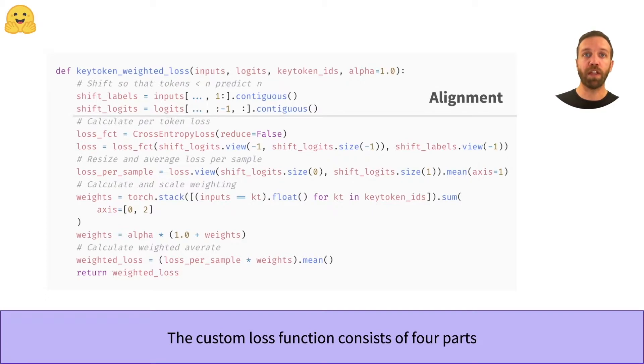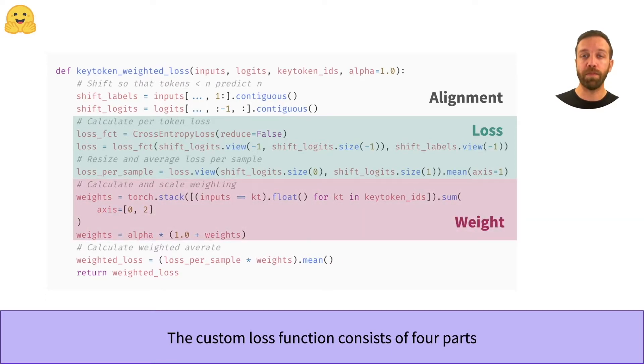First, the inputs and logits are aligned. Then, the loss per sample is calculated, followed by the weights. Finally, the loss and the weights are combined and returned.